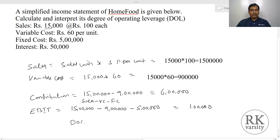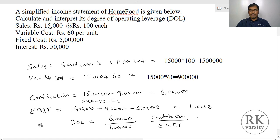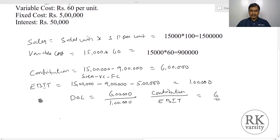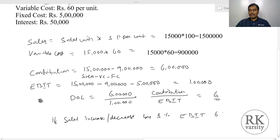Now the Degree of Operating Leverage equals Contribution Margin of 6 lakhs upon EBIT of 1 lakh, which equals 6. This means if sales increase or decrease by 1%, EBIT will increase or decrease by 6%.